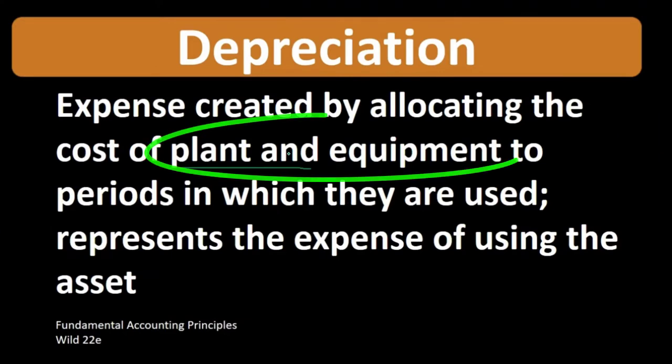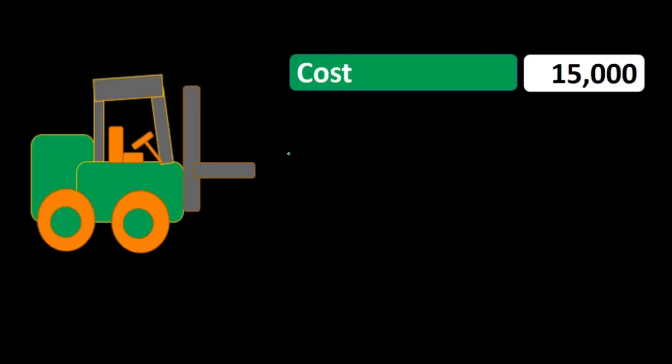So as we're using the assets, we are expensing those and we're allocating the cost over the useful life. Let's take a look at an example.